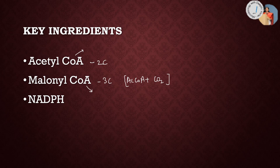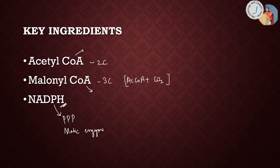Apart from the enzymes, a very important ingredient involved in fatty acid synthesis is NADPH, a reducing agent — nicotinamide adenine dinucleotide phosphate. NADPH mainly comes from the pentose phosphate pathway, also called the hexose monophosphate shunt, which is the main pathway through which we get NADPH. Additionally, the enzyme called malic enzyme also helps us to get a reasonable amount of NADPH.